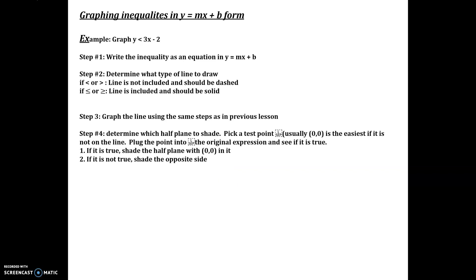Here are the steps to graph inequalities in y = mx + b form. For example, to graph y < 3x − 2: first, write the inequality as an equation, ignoring the inequality sign. Then determine what type of line to draw — if it's a strict less than or greater than, the line is dashed; if it's less than or equal to or greater than or equal to, the line is solid.